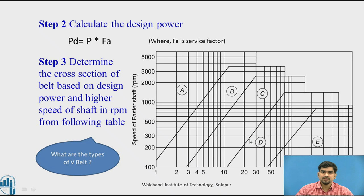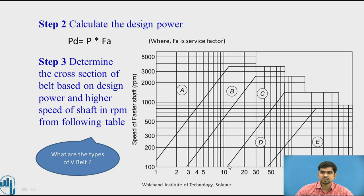From the table, if the smaller pulley rotates at 1000 RPM and the power is 10 kilowatts, we must select the appropriate cross-section. The horizontal axis indicates power and the vertical axis indicates the speed of the faster pulley. Projecting the line for 1000 RPM and 10 kilowatts, we select the B type cross-section. Depending upon the speed as well as the power, we select the appropriate cross-section of the belt.